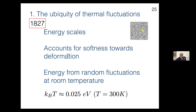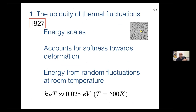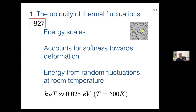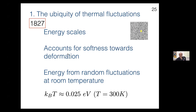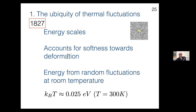The example behind the ubiquity of thermal fluctuations goes back to Brown. This gives an idea of the basic energy scales of something sitting inside a fluid. Soft matter systems can change their structure purely through thermal forces — that's why they're considered soft. The classic definition of a soft matter system is that its structure can change in significant ways just purely through thermal fluctuations. The energy from thermal fluctuations is estimated as k_B times T, which is about 0.025 electron volts at 300 Kelvin.